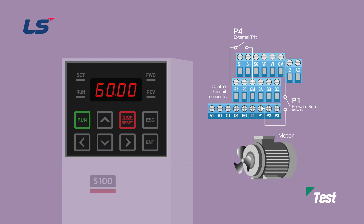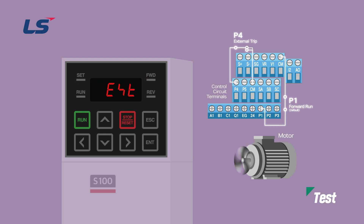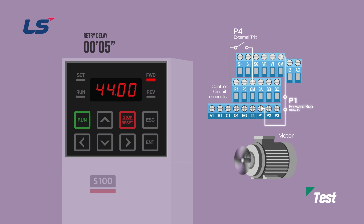Let's run the test with the parameters we set earlier. First, turn on the P1 terminal to run the motor. Turn on the P4 terminal to create a trip situation. When the trip message appears on the LCD keypad screen and the motor stops, turn the P4 terminal off. Since the external trip is a latch-type trip, turning the P4 terminal off will not clear the trip. Five seconds after the trip occurs, it will automatically reset, and the motor will run because the P1 terminal is left on.